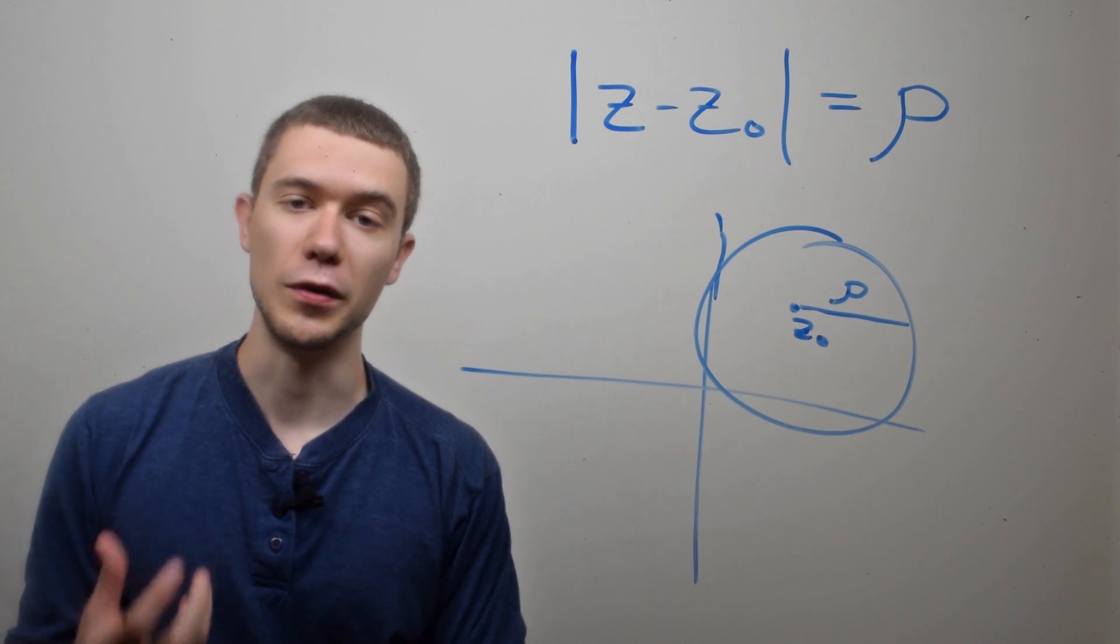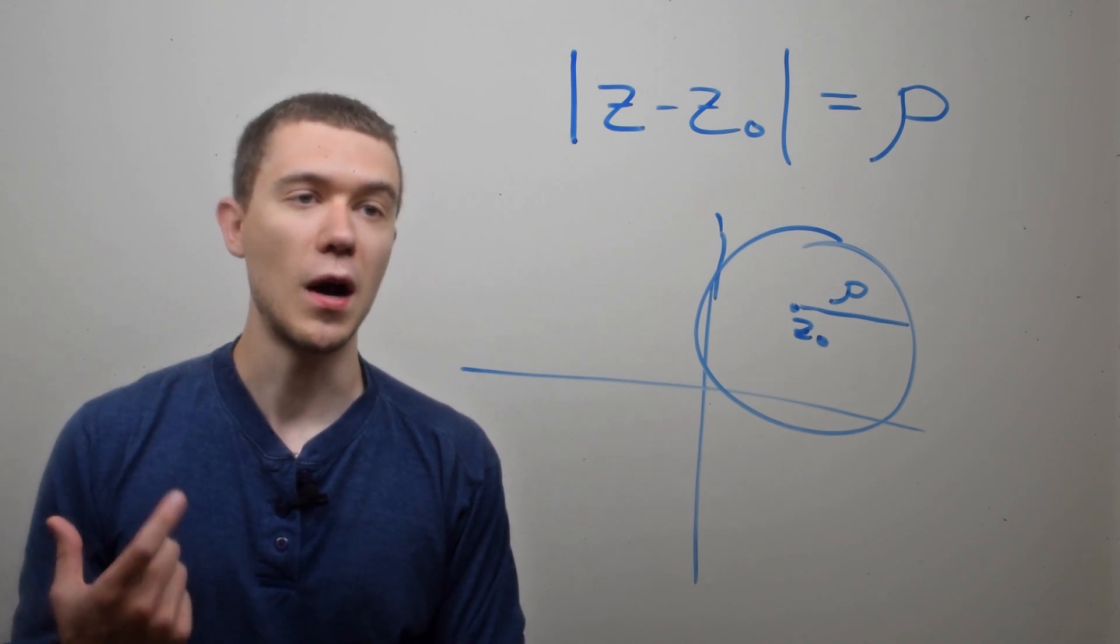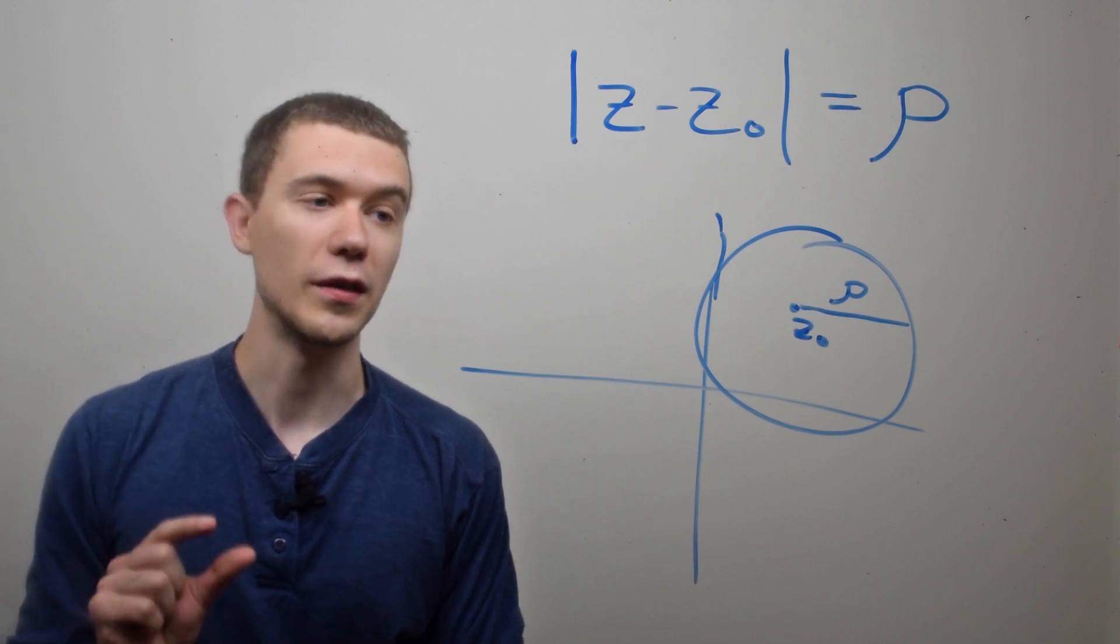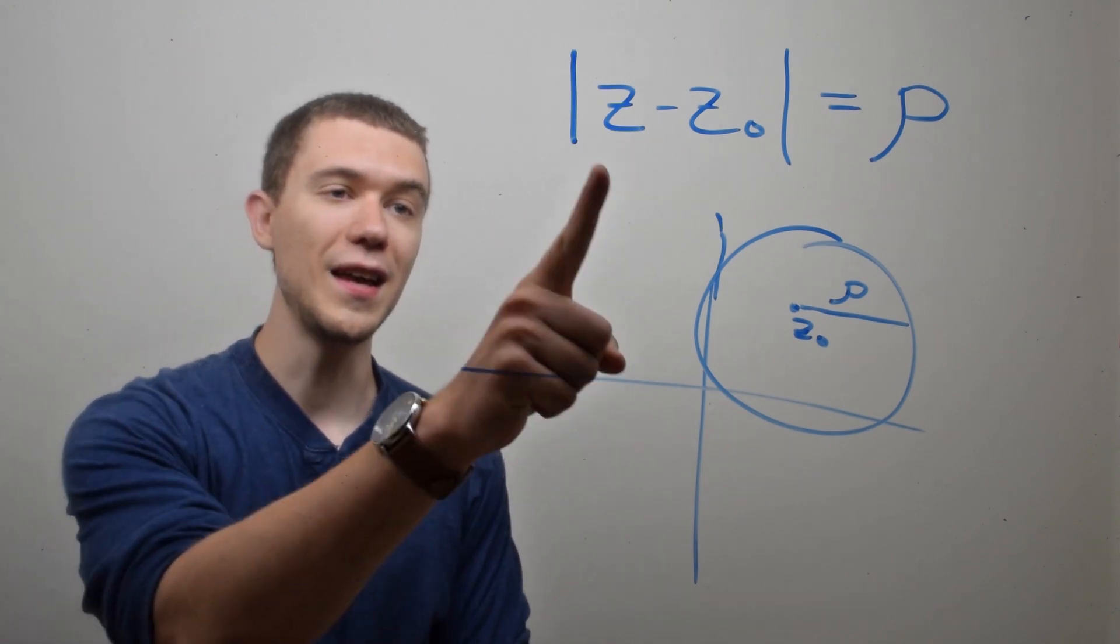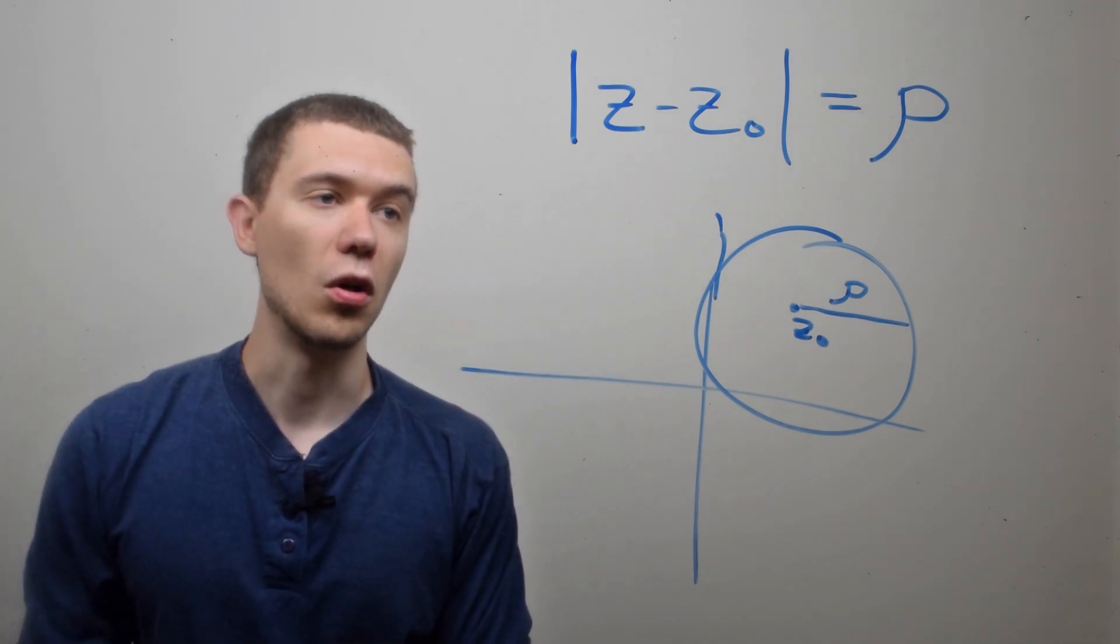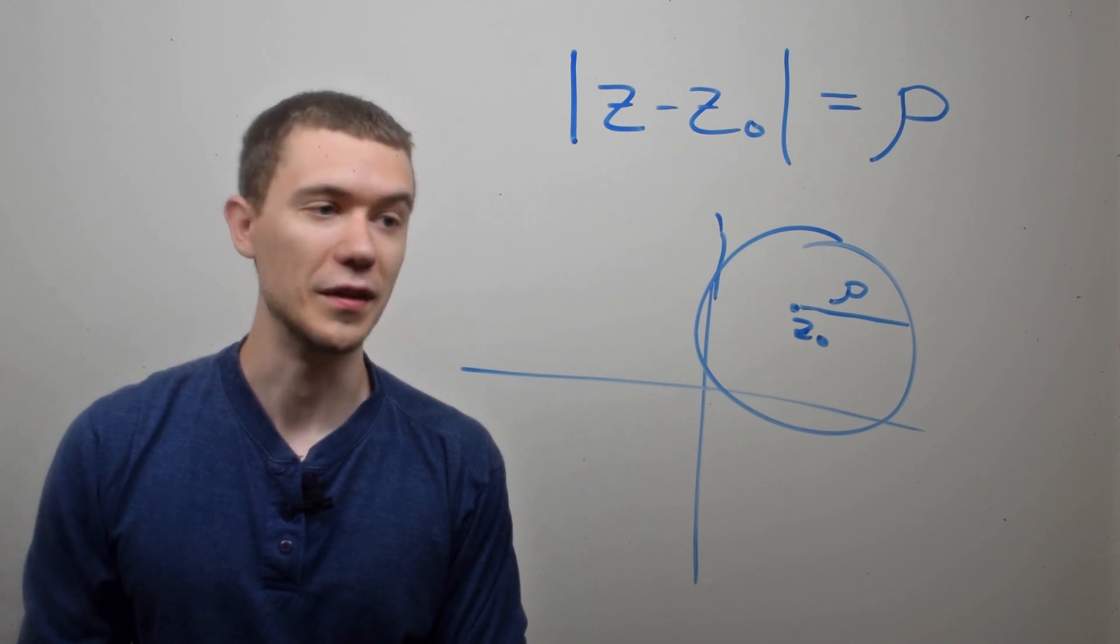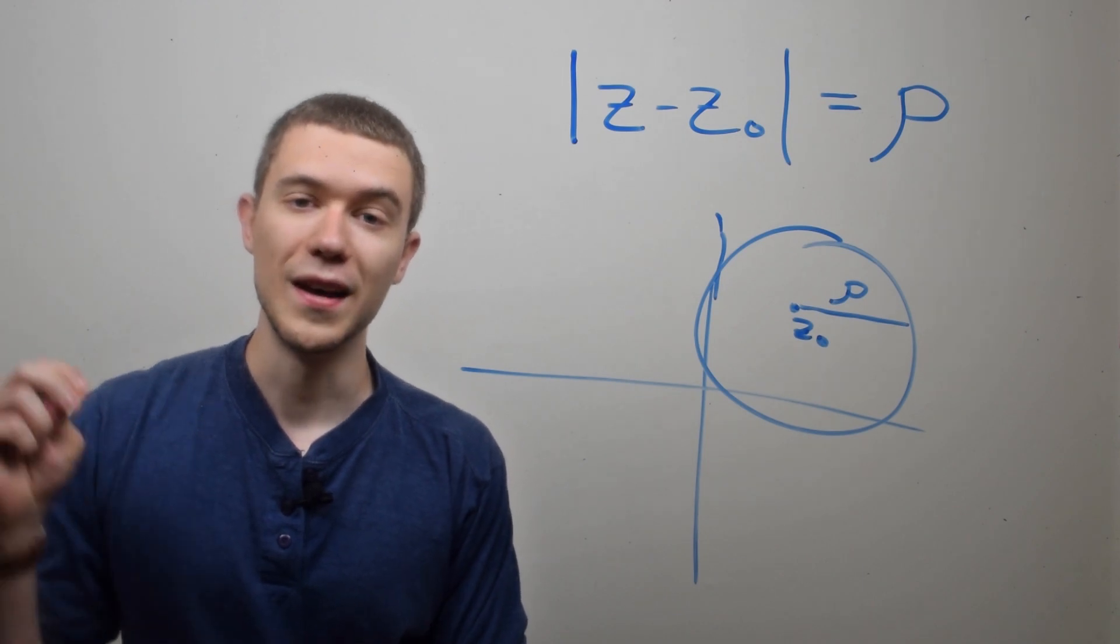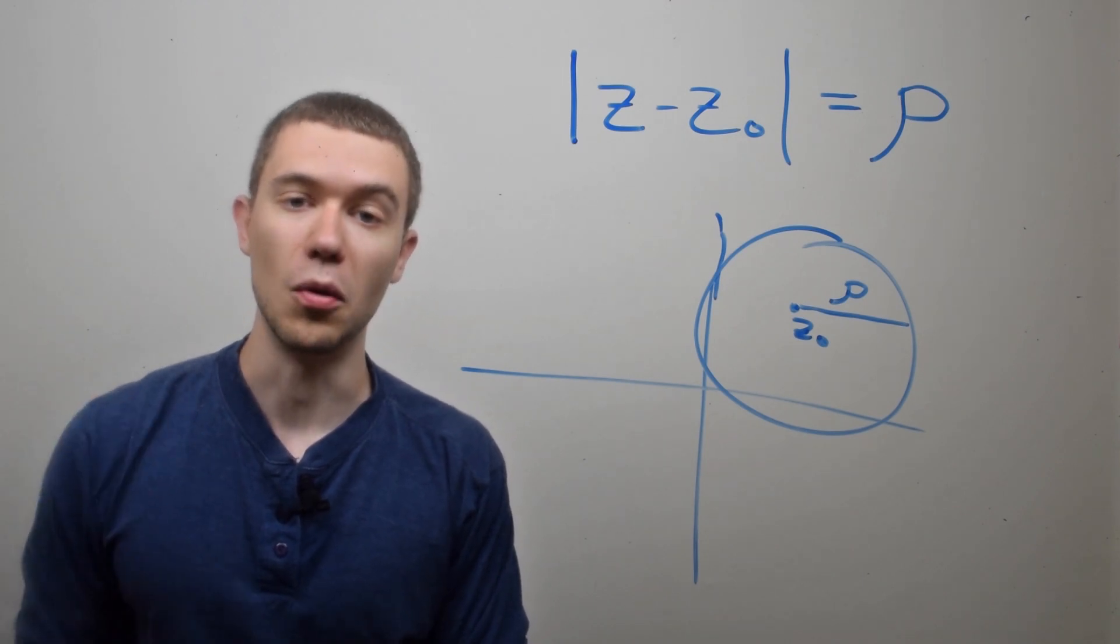This makes sense when you think about it, because what does modulus mean? Modulus is just the distance between those points. So what this is saying is all points that are equally distant from z-naught, or rather have an equal distance of rho. And that's how we define circles, right? The set of all points that are equally distant from another point.